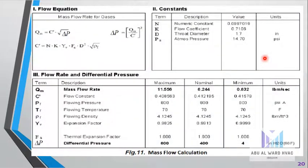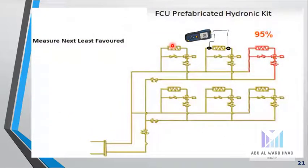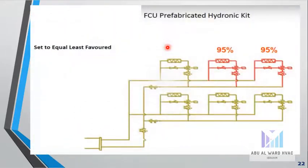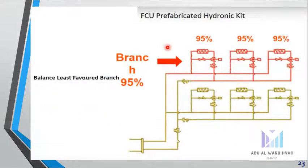Here is the formula to calculate the flow based on the delta P which is measured. We have some constants and some variables like diameter. We can go to the next FCU and do the same on the next least favored unit. We will do the same in the next FCU, and then we will get the branch itself balanced.